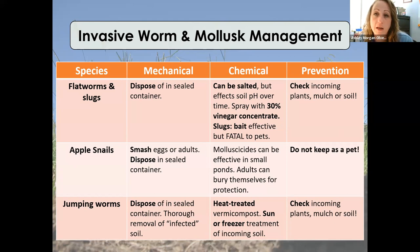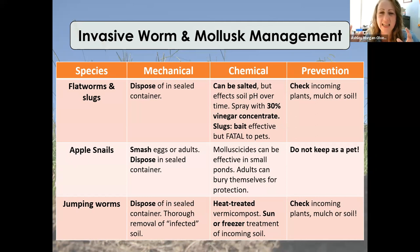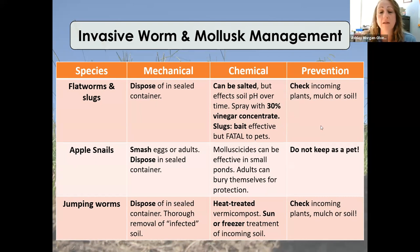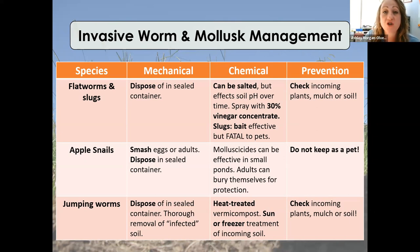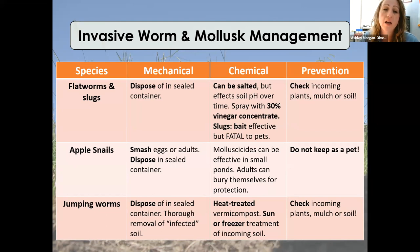Organic slug bait is effective for slugs — use the organic kind because the other is fatal to pets. Beer does not lure slugs as effectively; beer with yeast works better — day-old dough left out can attract them. They come in through plants, mulch, or soil, so check things when you're bringing them in. Apple snails: don't keep them as pets — they are aquatic and may appear after flooding events. Jumping worms are very hard to remove from your area — they're soil-dwelling organisms and you cannot spray them because they're earthworms.